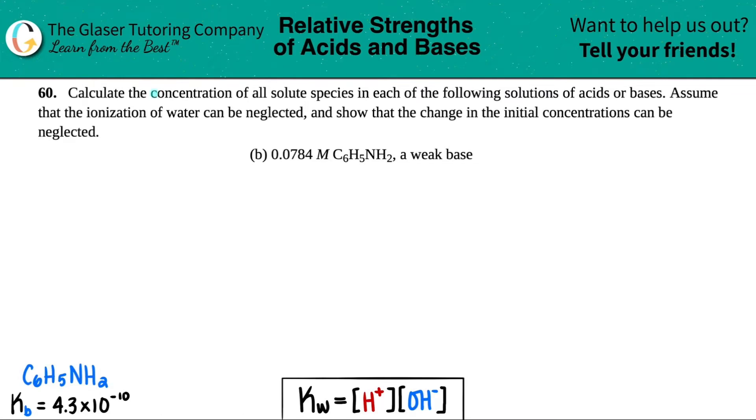Number 60, calculate the concentration of all solute species in each of the following solutions of acids or bases, assume that the ionization of water can be neglected, and show that the change in the initial concentrations can be neglected. And then we have letter B. So in this case...